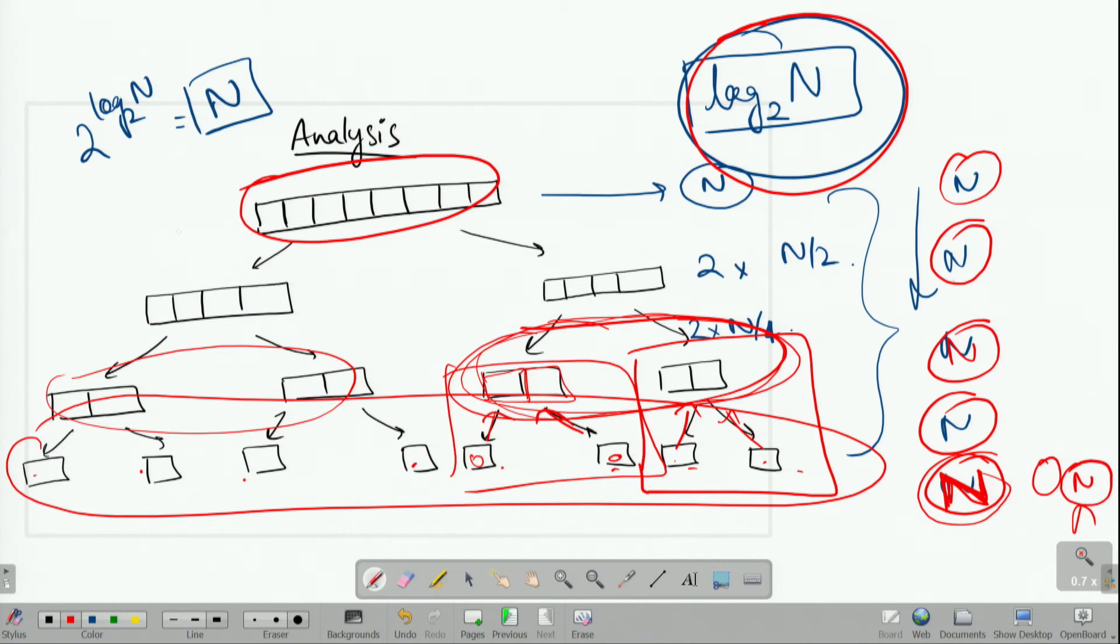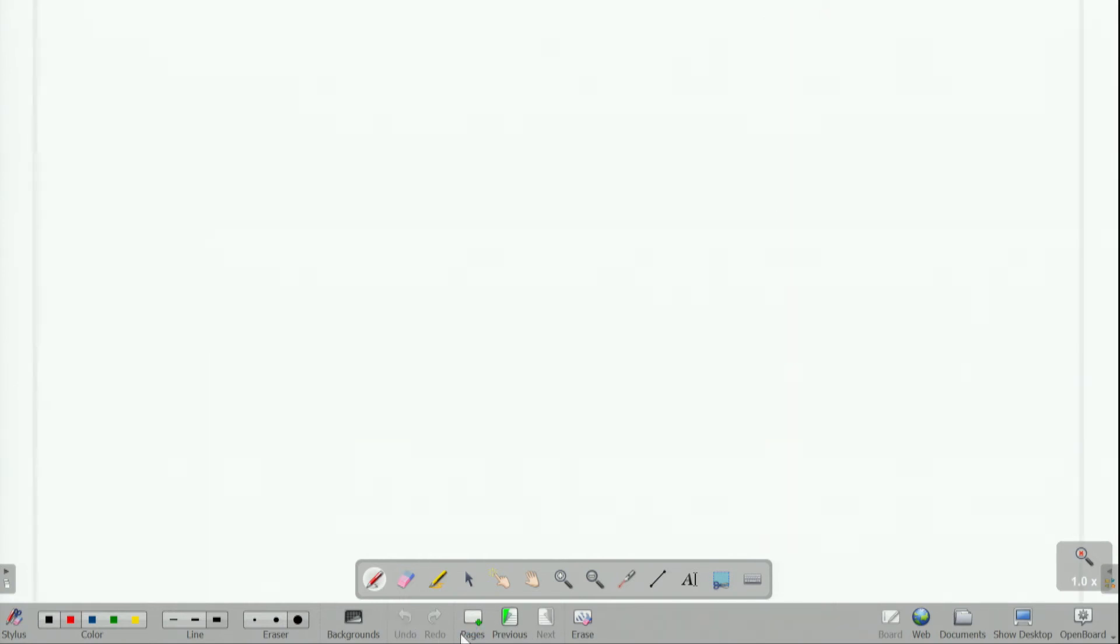Now, since there are log n to the base 2 number of levels, the total number of elements to look at or operations to do would be the number of levels multiplied by number of operations we have to do in each level.